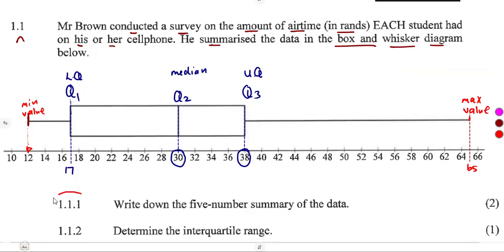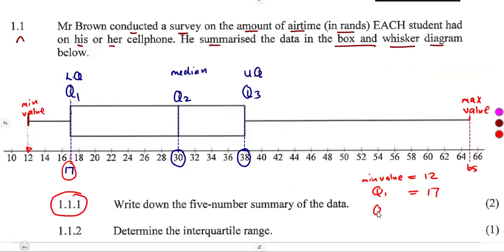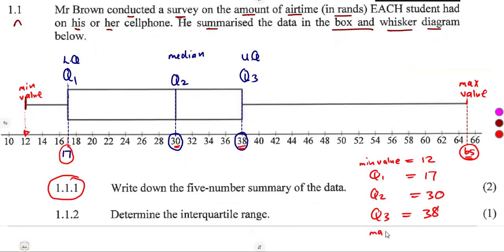These numbers are very important for you to know. The question asks: write down the five-number summary of the data. So these are the numbers we have taken from the diagram: minimum value is 12, Q1 is 17, Q2 (the median) is 30, Q3 (upper quartile) is 38, and the maximum value is 65.